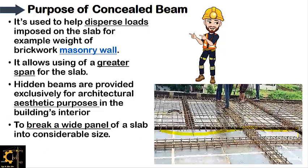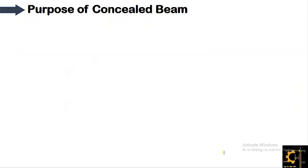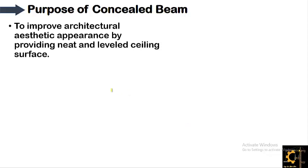This might be the dining hall or, if it is an office building, a conference room. To provide the clear span below, concealed beams are provided over it so that the panel size is broken into a considerable size and the lower side remains clear and leveled, to improve architectural and aesthetic appearance by providing a neat and leveled ceiling surface.